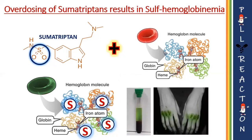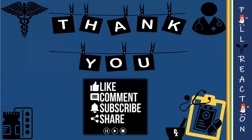Treatment for sulfhemoglobinemia is straightforward: red blood cells have a natural lifespan of about 120 days, after which they are broken down and their components are recycled. So any RBCs containing sulfhemoglobin will be destroyed by macrophages, resulting in a decreased concentration of sulfhemoglobin. For more such educational videos, please subscribe to our channel and click the bell icon for updates. Thanks for watching.